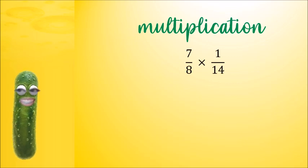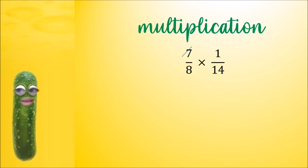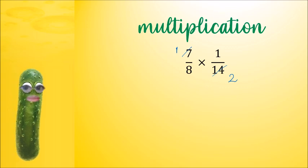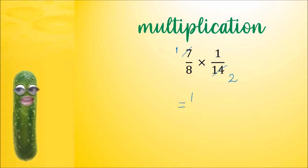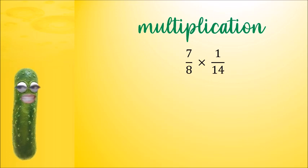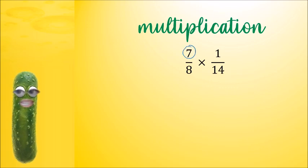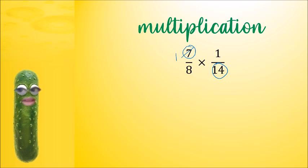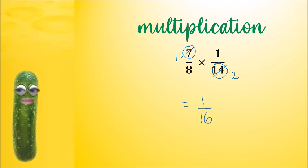Let's try another question and do it both methods. The quick method is to look for a number at the top, like 7, and a number at the bottom, 14, that has a common factor. 7 goes into both 7 and 14: 7 into 7 goes 1 time and 7 into 14 goes 2 times. So the top numbers are left with 1 times 1 is 1, and 8 times 2 is 16 — giving us 1 over 16. For 7 over 8 times 1 over 14, if we cancel first: 7 and 14 have 7 as a common factor. 7 divided by 7 is 1, and 14 divided by 7 is 2. So we multiply the top: 1 times 1 is 1, and 8 times 2 is 16. Pretty simple.